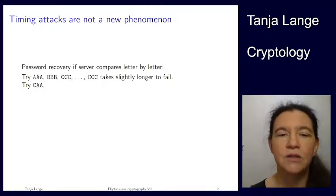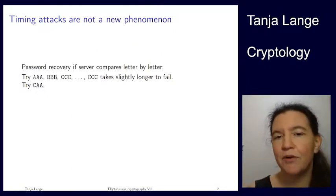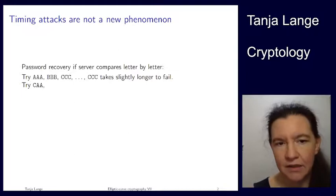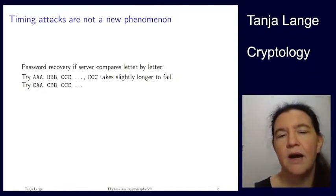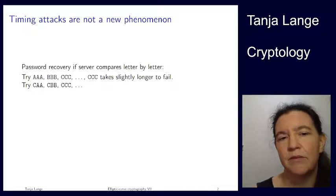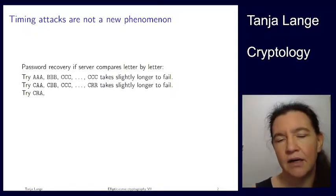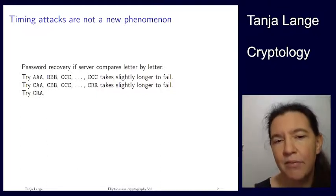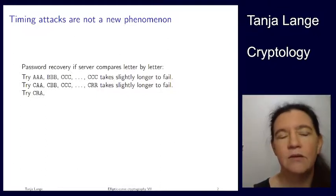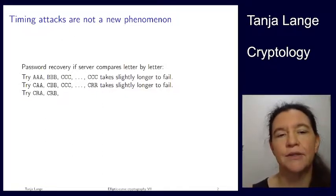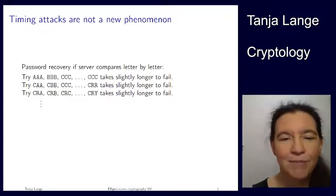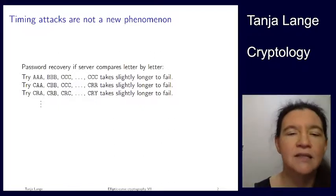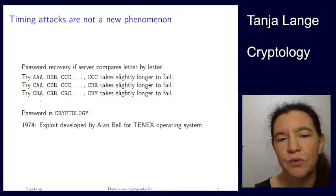This longer-to-fail is good enough information. Sitting there with a very precise stopwatch, I can determine that the first character was probably a C. Under this hypothesis, let's try CAA, CBB, CCC — all taking similar time to fail — until I get to CRR, and that takes slightly longer. So probably R is the next correct character. Then I try the next character until I get to CRY, which takes a bit longer to fail. You can already guess the password is 'cryptology'.